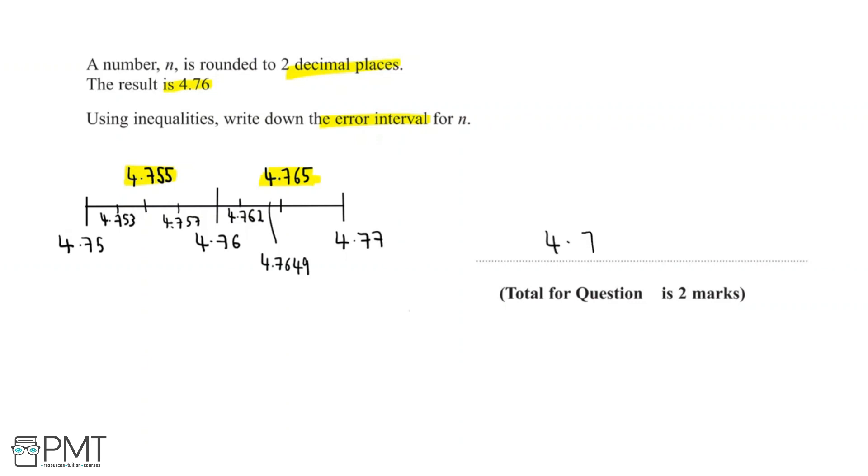We'll say 4.755 is less than or equal to n, and n is less than 4.765. So what we're saying here is that n is more than or equal to 4.755, but is less than 4.765.